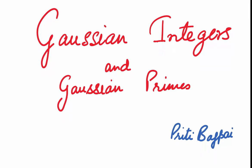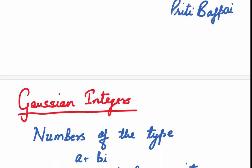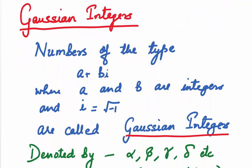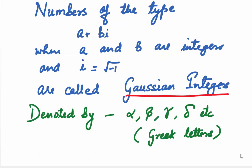Let us start by first defining what Gaussian integers are. Gaussian integers are nothing but complex numbers of the type a plus bi, where a and b are integers and i is nothing but the square root of minus 1. So, Gaussian integers are nothing but a subset of the set of complex numbers.